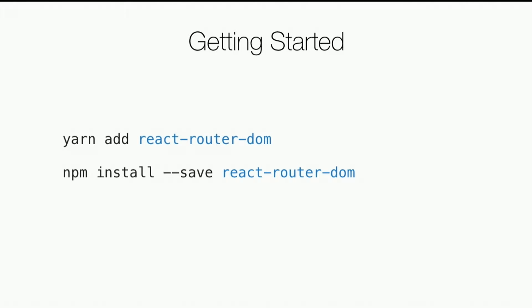For getting started, it's pretty simple. You just do either a yarn add or an npm install of react-router-dom. There are a few different React Router packages depending on what sort of app you're doing. For a web project it's react-router-dom. There's also packages for React Native if you're doing an iOS or Android app, but for our purposes — a web project — we're going to use react-router-dom.